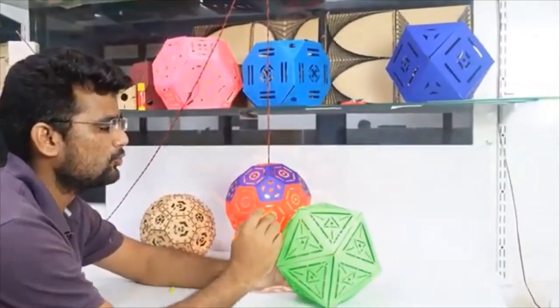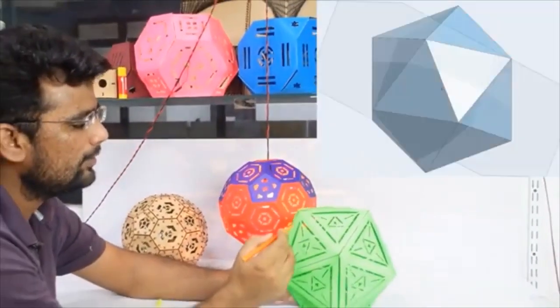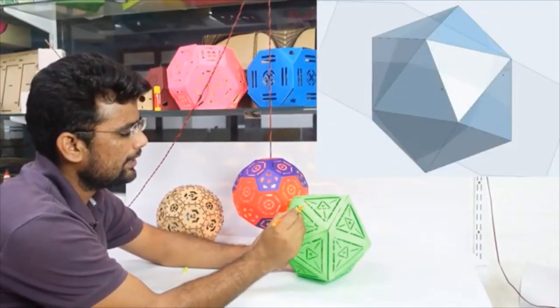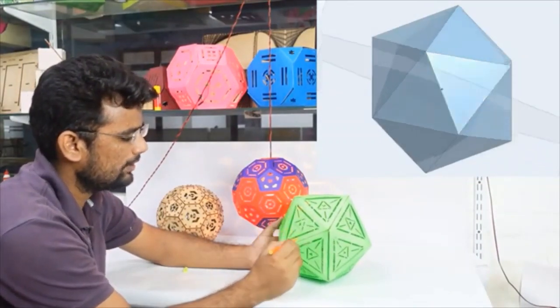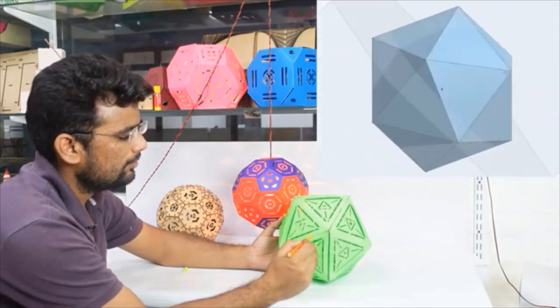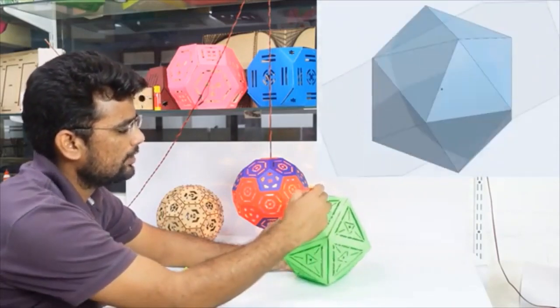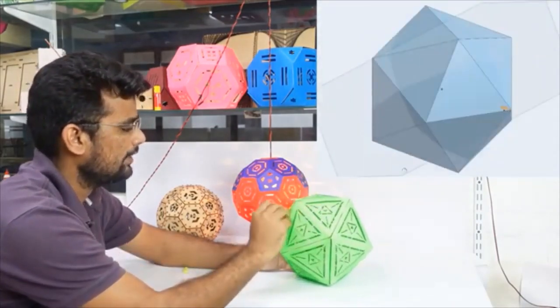For making this, we have to cut its vertices and divide one-third of its sides. If we divide one-third of all its sides and cut its vertices, removing these one-third parts, a pentagon is obtained at its vertex.